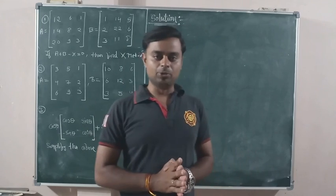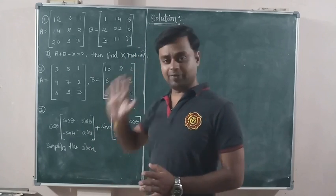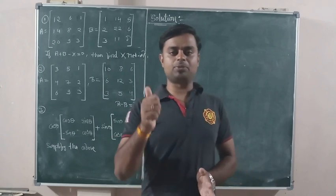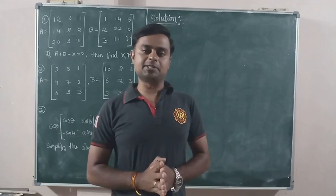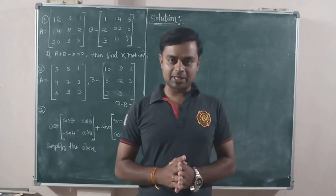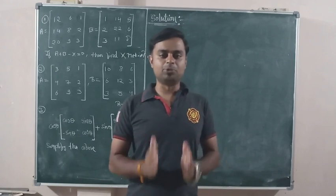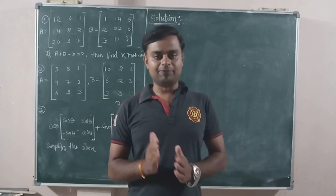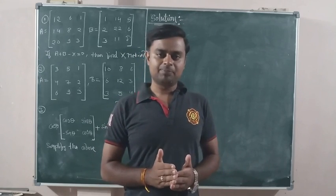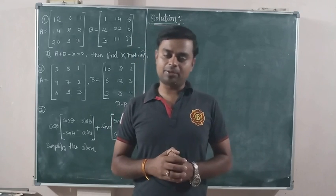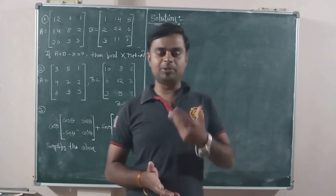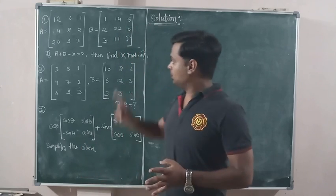You can see three problems written on the board. Let us begin with the first problem. First of all, I want to tell you a golden rule to always remember: when you have two or more matrices, their orders must be the same before you can perform addition or subtraction. For example, if matrix A is three by three, matrix B must also be three by three. If matrix A is two by three, matrix B must also be two by three. Then we can add or subtract.